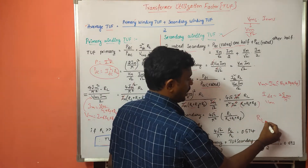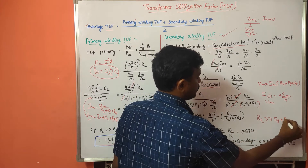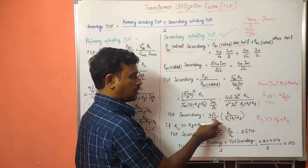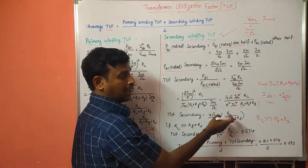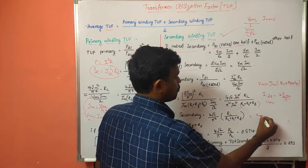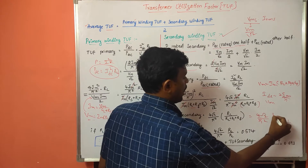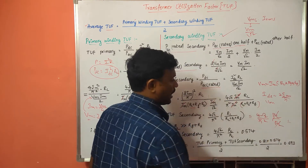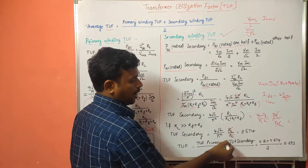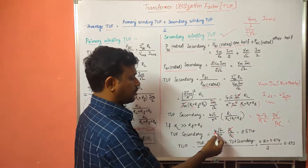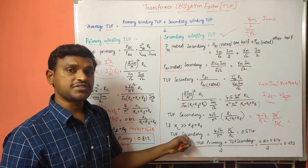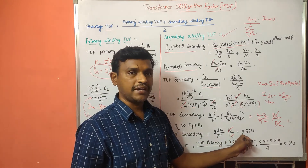Since R_L is much greater than R_F + R_S, we neglect those terms. So R_L and R_L cancel, leaving 4√2 / π². The value of 4√2 / π² is 0.574. This is the transformer utilization factor of the secondary winding — TUF secondary winding equals 0.574.